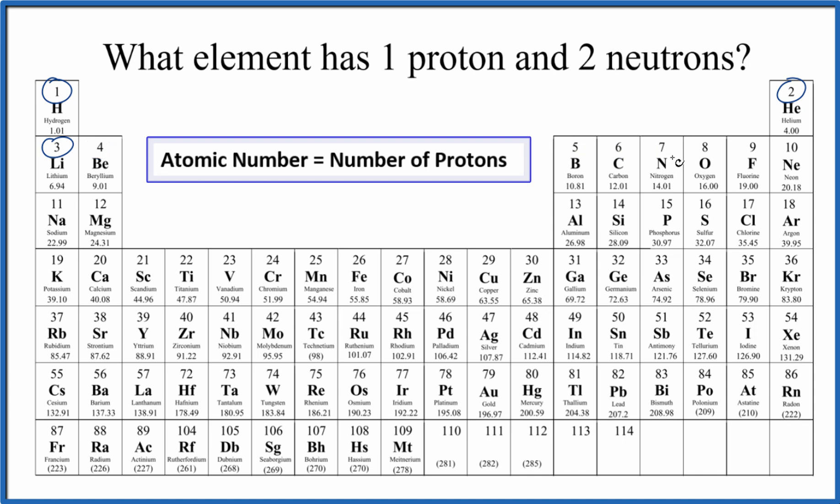So atomic number one is hydrogen. The element with one proton is hydrogen, and it really doesn't matter how many neutrons we have. One proton is always hydrogen.